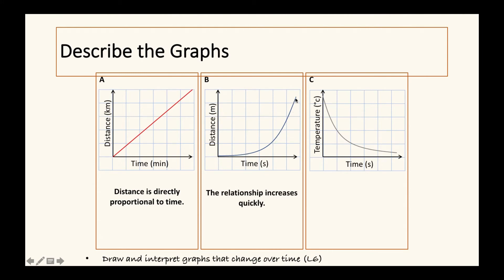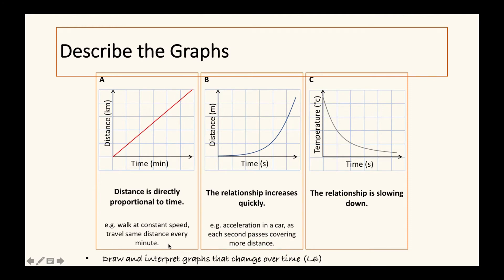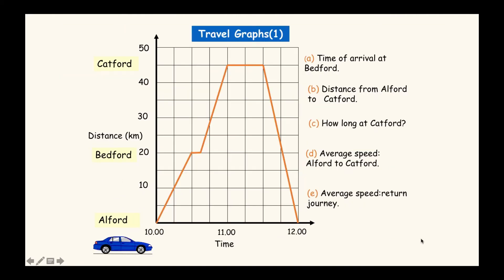One graph shows it starting slow but increasing quickly, while another starts up high and slows down. An example of the proportional graph could be walking at a constant speed. The accelerating curve represents a car accelerating - each second it covers more distance. The decreasing curve shows something like a hot cup of tea cooling quickly at first, then more slowly as it approaches room temperature.